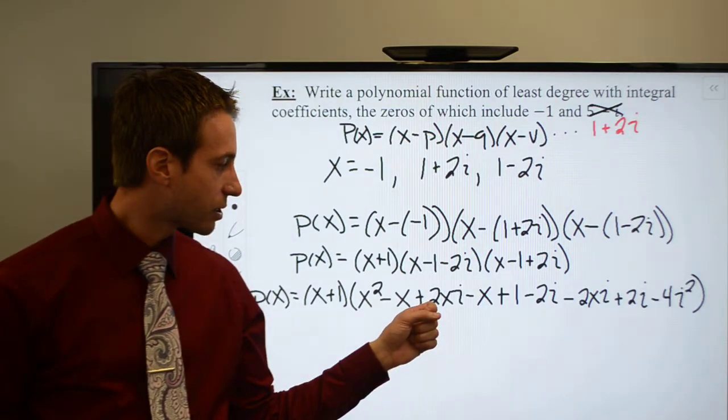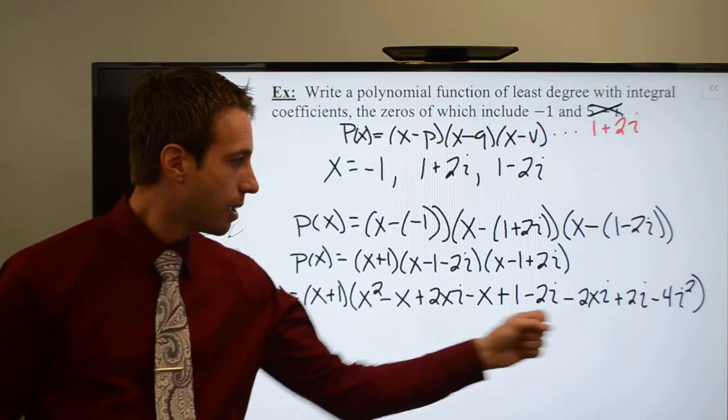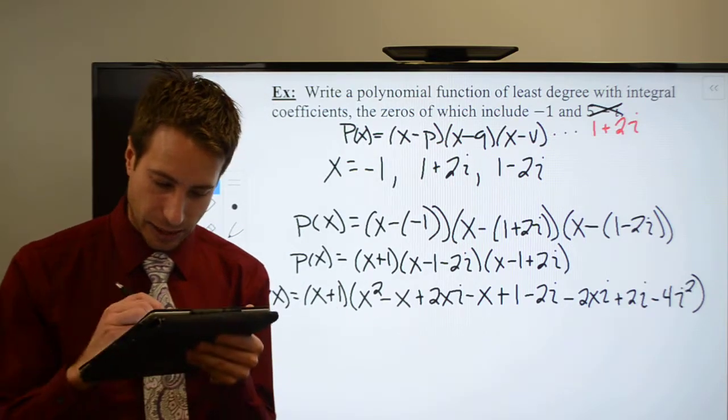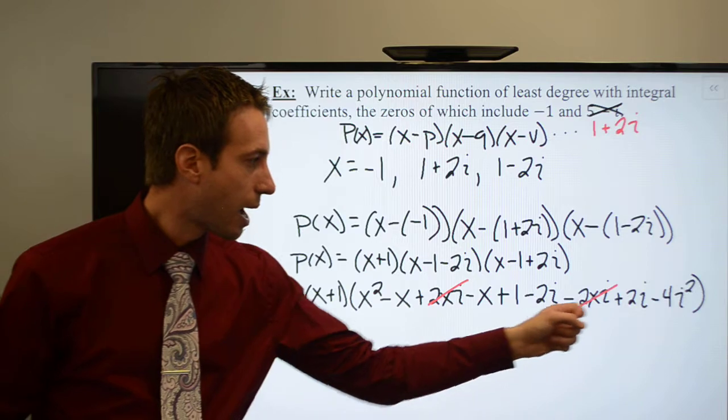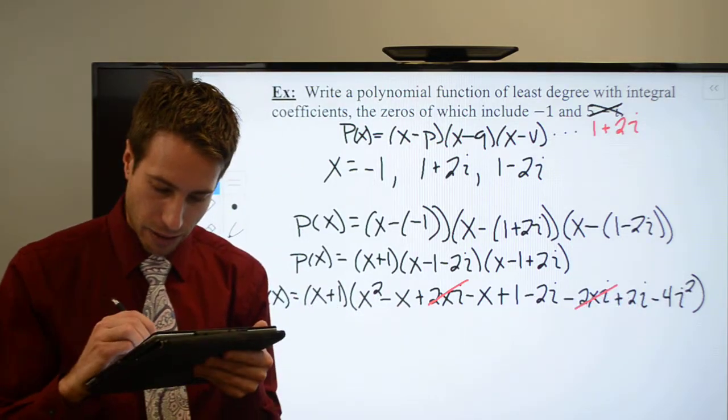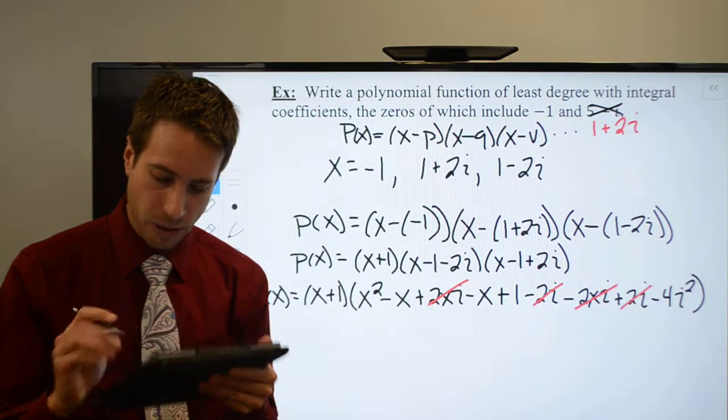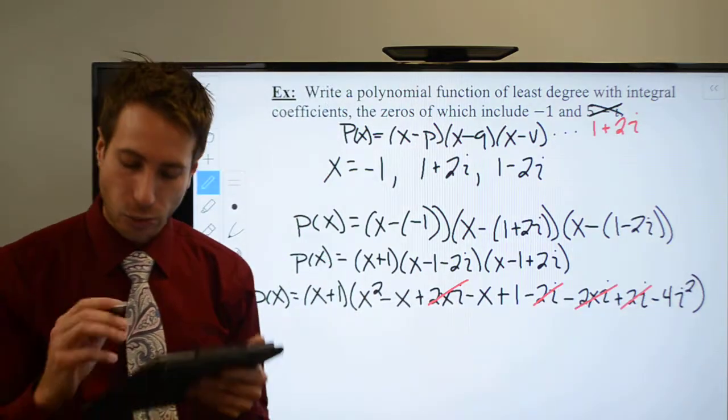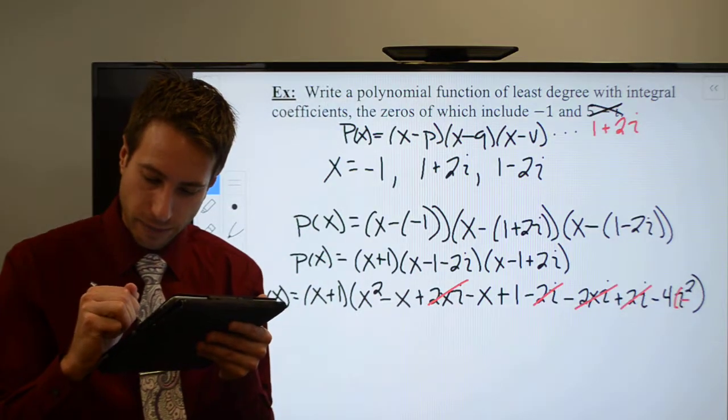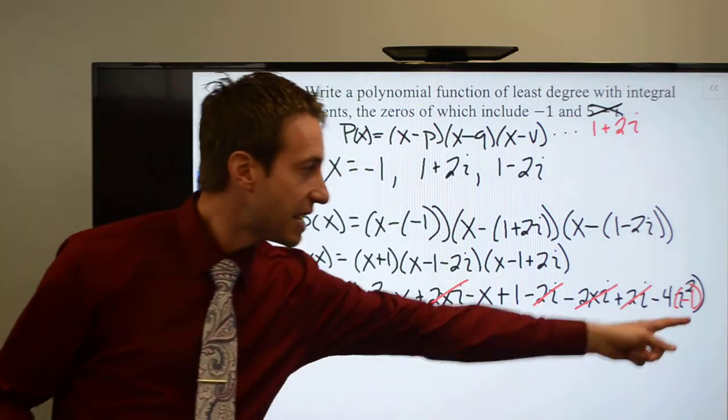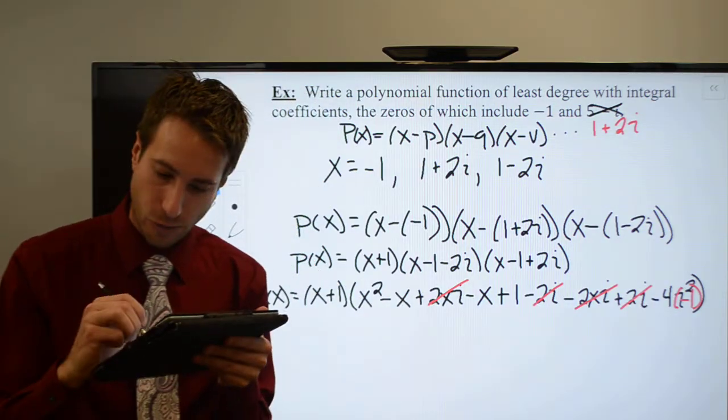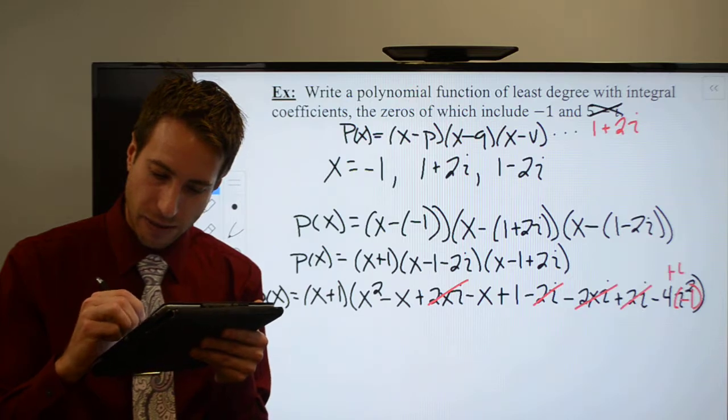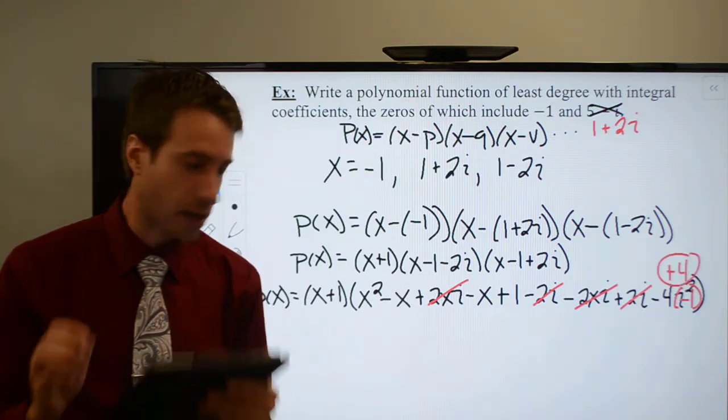I have plus 2xi minus 2xi. So those guys drop out. I have minus 2i plus 2i. Those guys drop out. And remember, i squared is equal to negative 1, which means I have negative 1 times negative 4, which is actually a positive 4. So let me write a little note over here. That's going to become a positive 4.